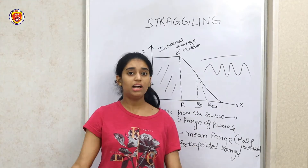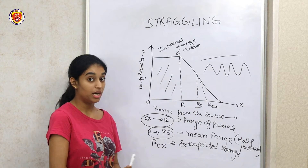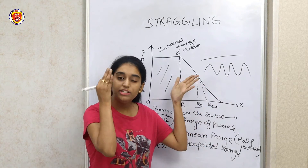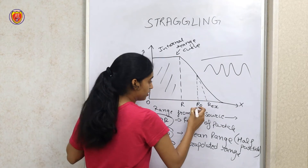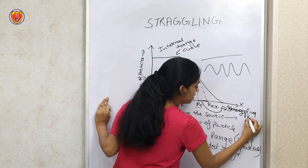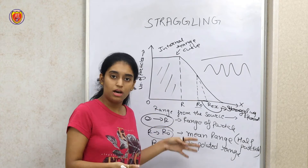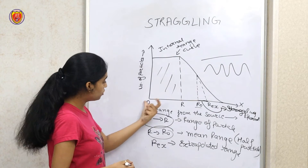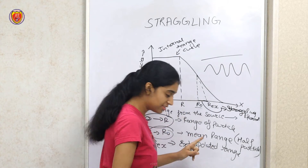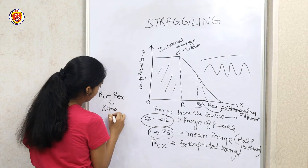Now you will think, where does straggling come in? The extrapolated range is R-EX and the mean range is R-naught. The difference between R-EX and R-naught is known as the straggling parameter. So the region from R-naught to R-EX is our straggling parameter.